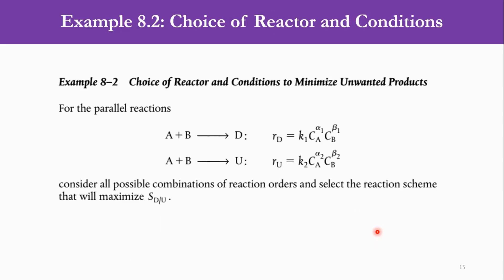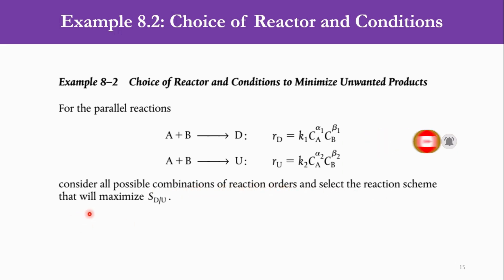Example 8.2 is the choice of reactor and conditions for parallel reactions. Two reactants A and B react to produce a desired product D and an undesired product U, with rate of formation R_D = K1 * Ca^α1 * Cb^β1, and R_U = K2 * Ca^α2 * Cb^β2. We consider all possible combinations of reaction orders and select the reaction scheme which will maximize the selectivity.